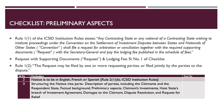A typical notice or request for arbitration is divided into the following parts: description of the parties including the claimants and the respondent state; factual background covering preliminary aspects, the claimant's investments and the host state's breach of the investment agreement, and the damages to the claimant; and then dispute resolution and request for relief.